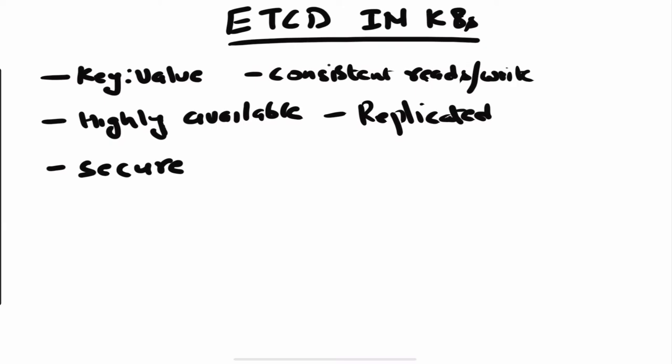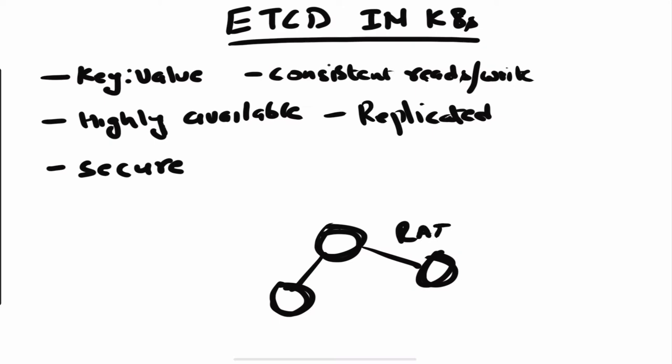The advantages of using etcd are that it has consistent reads and writes — any data which you write is immediately available for reading. It's also highly available. When you deploy a production-ready Kubernetes cluster, you'll normally see that etcd is actually an external component — it's not deployed along with the Kubernetes cluster. It's a cluster of its own with multiple nodes, like a three-node or five-node cluster, and they maintain leadership among themselves using the Raft protocol.